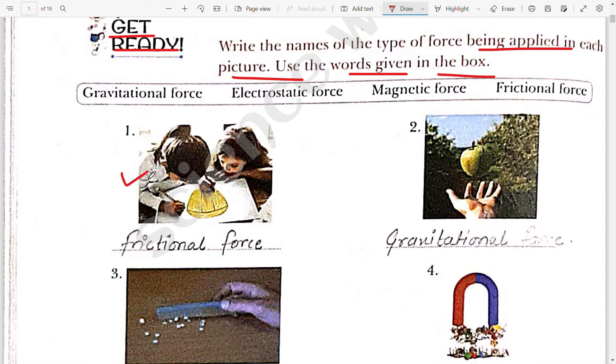The students are drawing on a chart sheet. So it is the force between two surfaces, right? So it is frictional force. You can see in second picture, the apple is falling down. It means it is gravitational force.